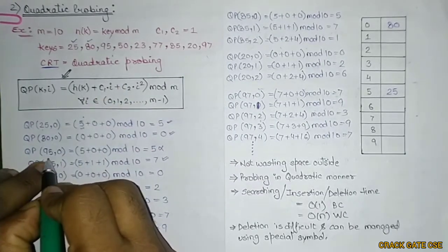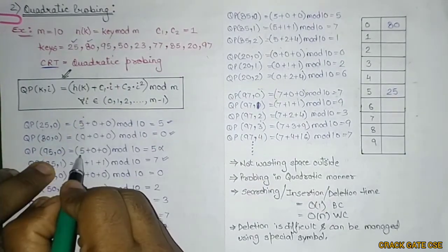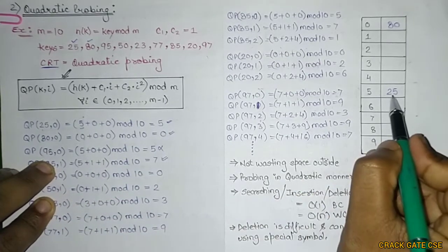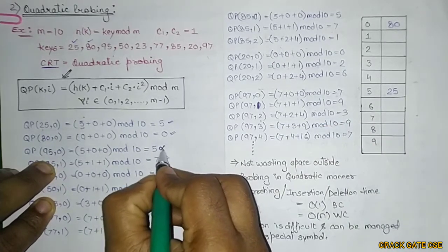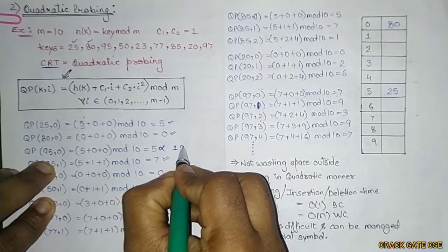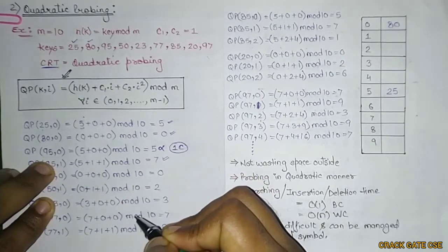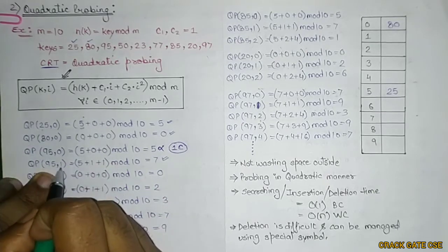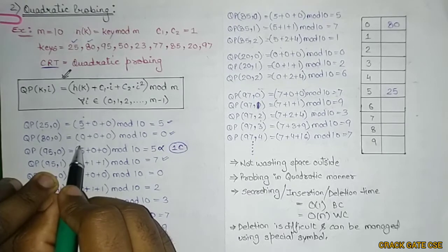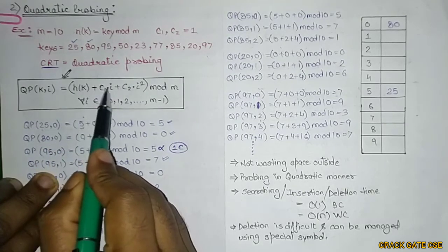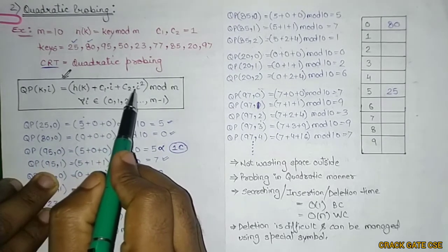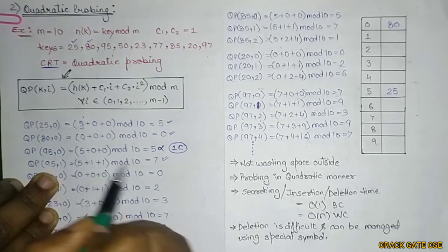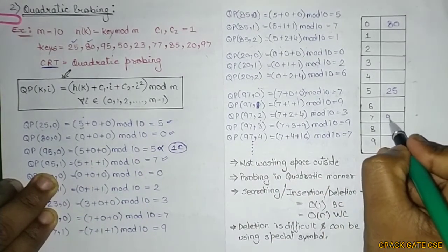For key=95, i=0: 95 mod 10 = 5, but slot 5 already has 25 — so there is a collision. We increment i to 1 and compute H(95,1) = 5 + 1*1 + 1*1² = 7. Slot 7 is empty, so 95 is placed at slot 7. That is 1 collision for key 95.